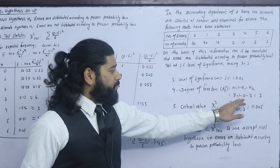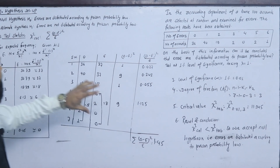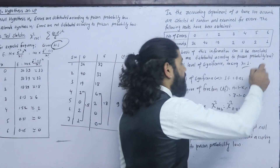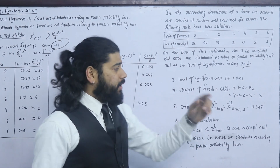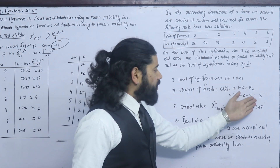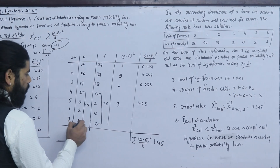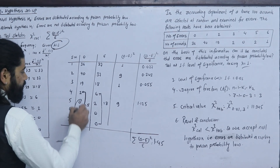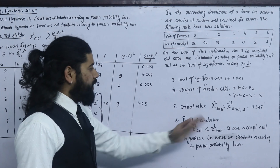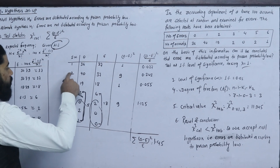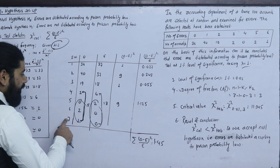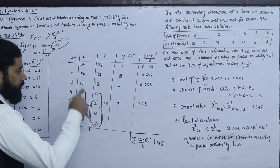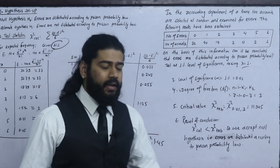The degree of freedom is n minus 1 minus k1 minus k2. Here n equals 7 classes, minus 1, minus 1 for lambda parameter estimated, minus 2 for pooled tail classes, giving degree of freedom equals 3. The critical chi-square value at 1% significance with the appropriate df is determined from the table.